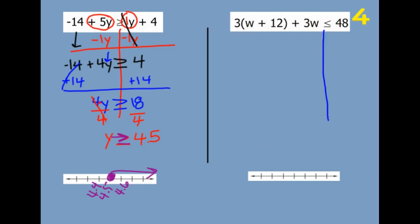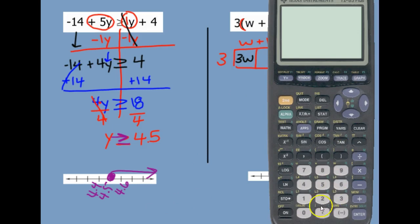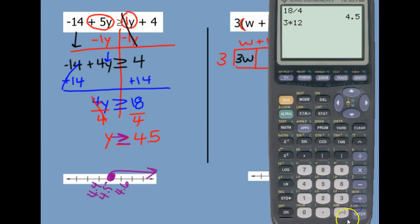We've got a couple steps to do on this one. I see parentheses, so I need to distribute or multiply here. So we have 3 and then W plus 12. I know 3 times W is 3W, and 3 times 12 — if you're not quite sure, just plug it in — 3 times 12 is 36.